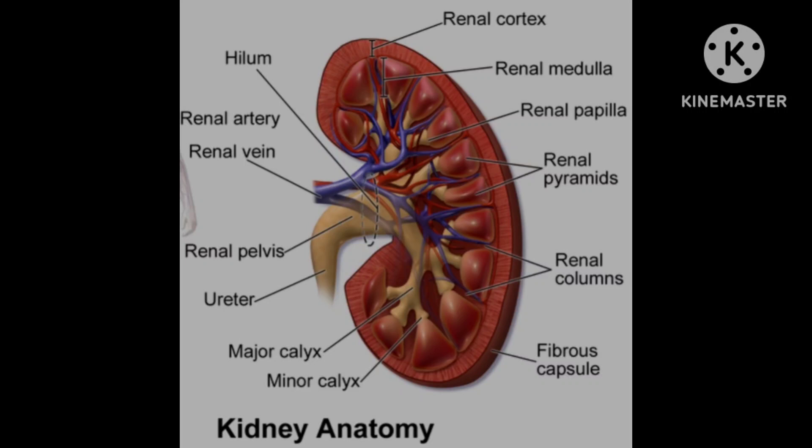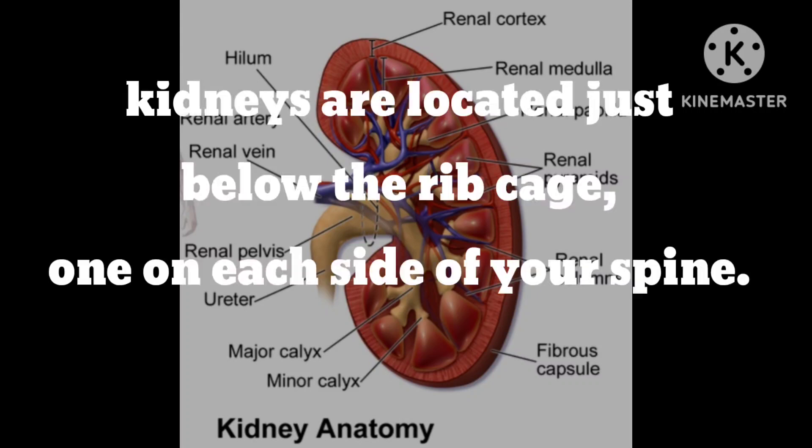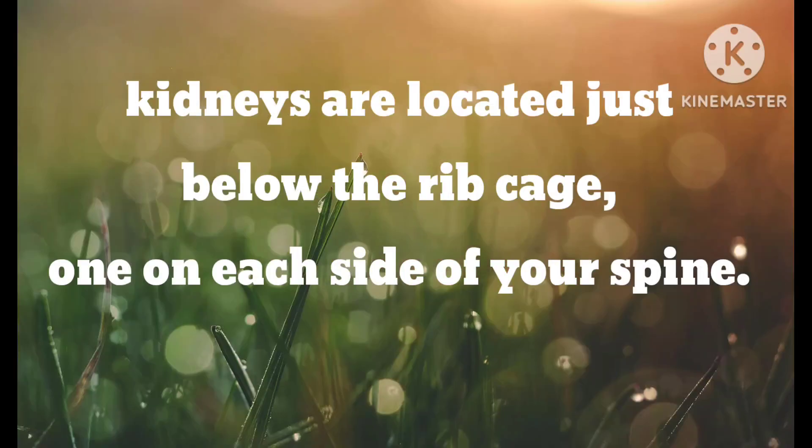You can see in this picture the kidney anatomy — what your kidney looks like, the parts of your kidney, and the location. The kidneys are located just below the rib cage, one on each side of your spine.